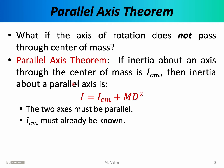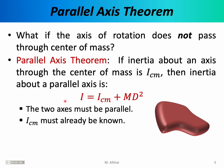If the inertia about an axis through the center of mass is denoted by I_CM, then the inertia about any other axis that is parallel can be calculated using this formula. Imagine some arbitrary solid object of any shape. Imagine the center of mass of the object is located here, and imagine an axis of rotation passing through this center of mass. Suppose you've already calculated the moment of inertia of the object relative to that center of mass axis.